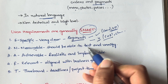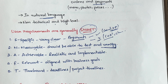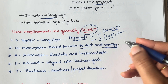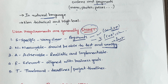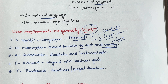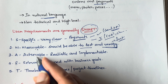M stands for Measurable — you should be able to test and verify a particular requirement. For example, if a user says the website or app has to be 'very fast,' that is not measurable. Instead, they should specify: the page must load in a maximum of five or ten seconds. There has to be a bound for everything so it can be measured.